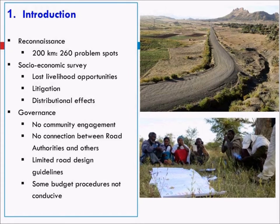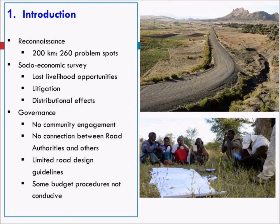We found evidence of a governance issue: no community engagement in the planning of roads in most cases, no connection between road development authorities and water development and agricultural offices, and limited road design guidelines incorporating options for water harvesting from roads. Budget procedures are also not conducive — if a road is designed based on a standard budget outline, modifying it to harvest water becomes problematic.